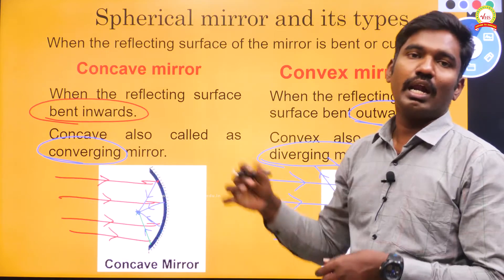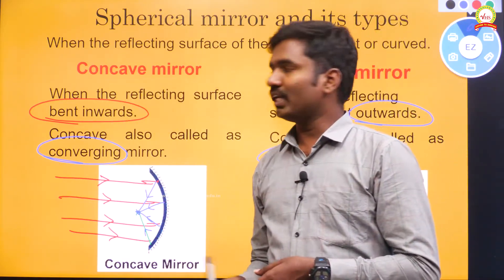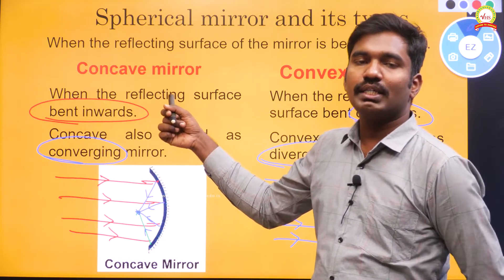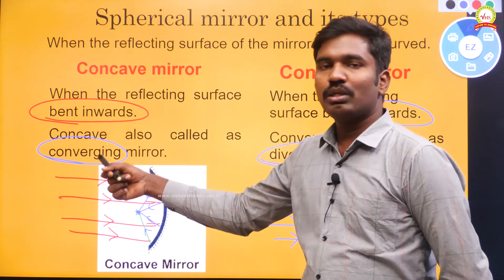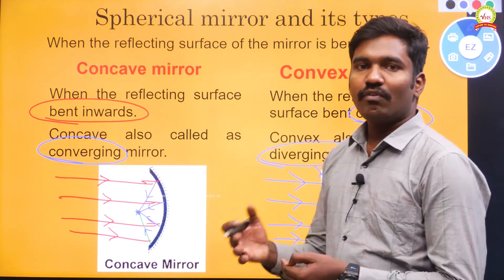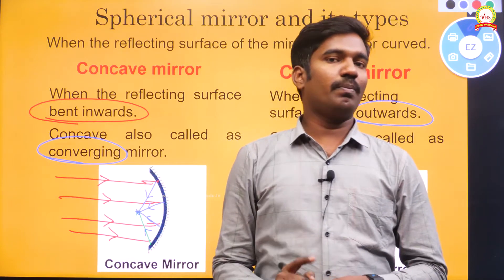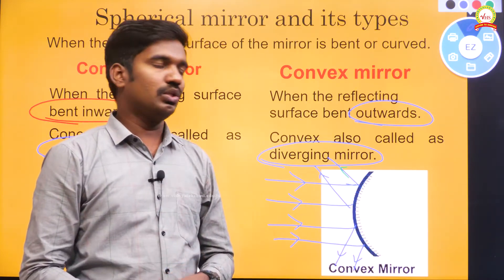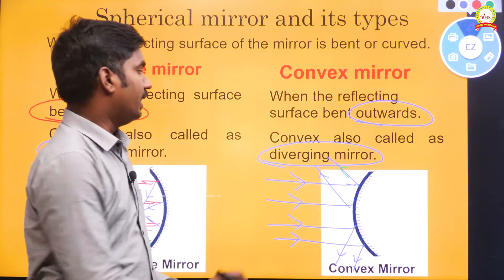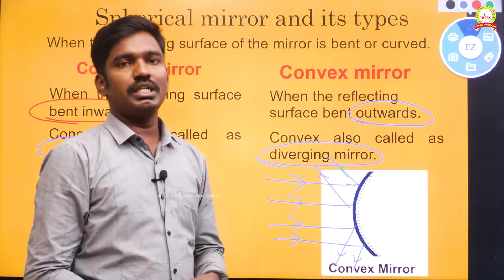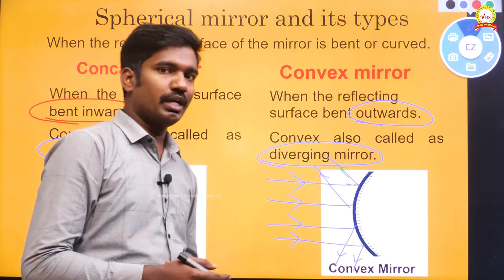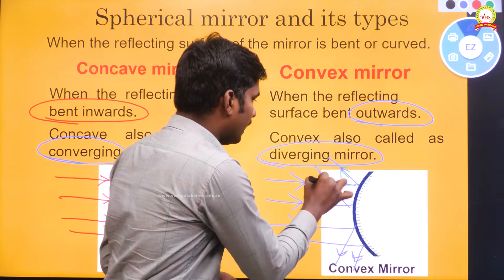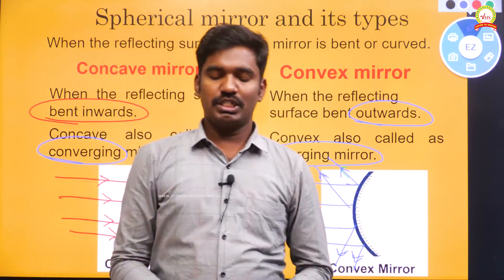To summarize: spherical mirrors are of two types — concave and convex. Whenever the reflecting surface is bent inwards, those mirrors are called concave mirrors, also known as converging mirrors, because after reflection all the reflected rays meet at one specific point. Whenever the reflecting surface is bent outwards, those are called convex mirrors, also known as diverging mirrors, because after reflection all the reflected rays move in different directions.